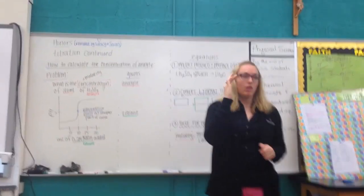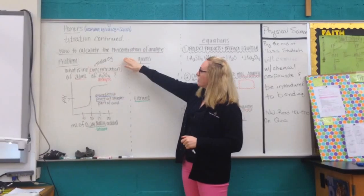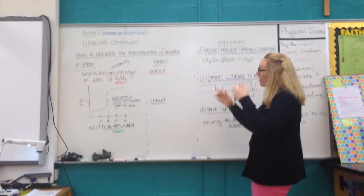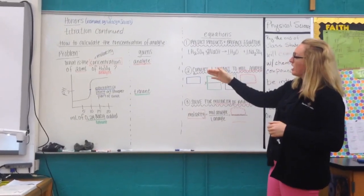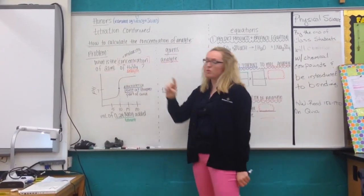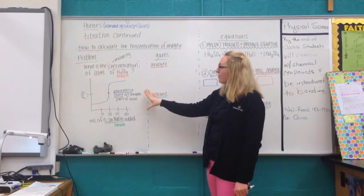In a titration, we're trying to find the amount of analyte. As Anthony told us, that's the whole point of this. So our question is: what is the concentration of 20 milliliters of H2SO4? And then we have a graph.